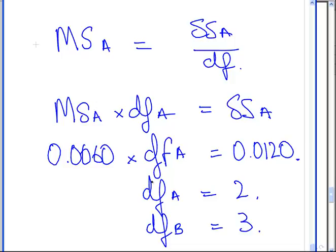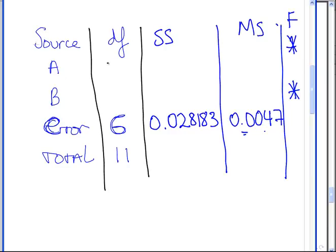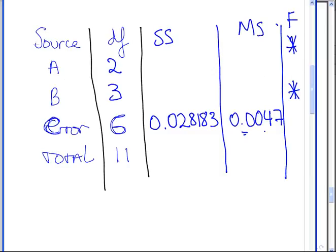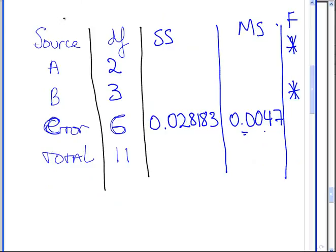Going back to the table, degrees of freedom for A is 2 and for B is 3. Since method had degrees of freedom of 2 and solution had degrees of freedom of 3, method must be factor A and solution must be factor B.